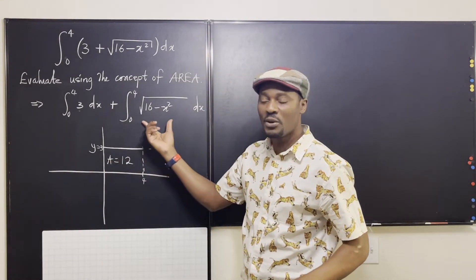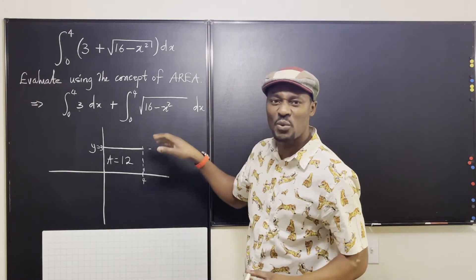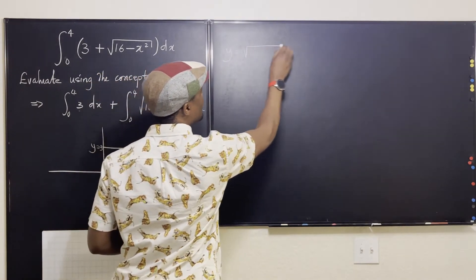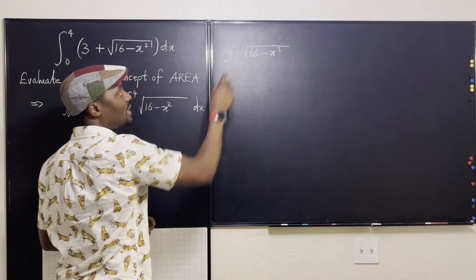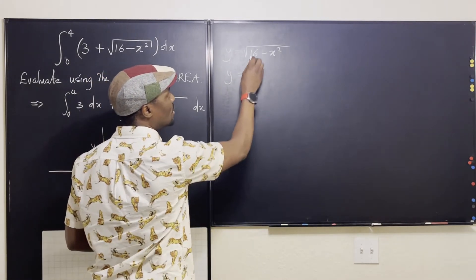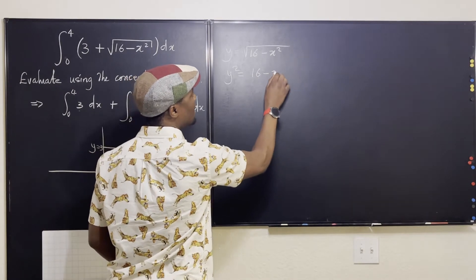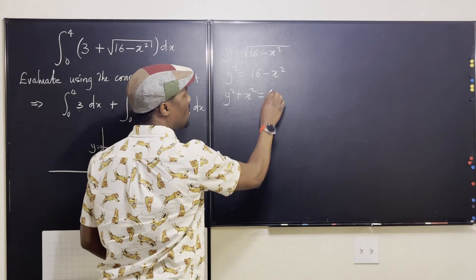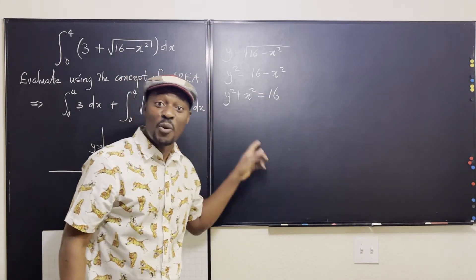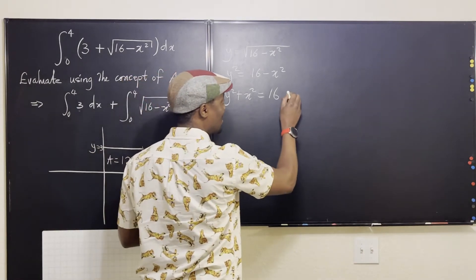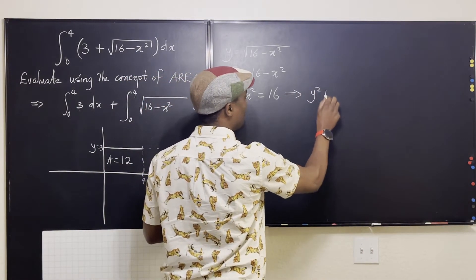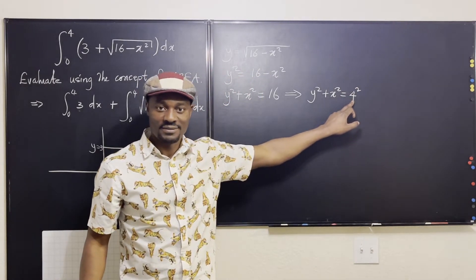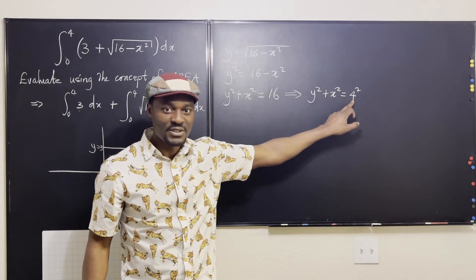Now we're going to add it to another integral given by y equals the square root of 16 minus x squared. Using the concept of area, if y equals the square root of 16 minus x squared, let's square both sides. You end up with y squared equals 16 minus x squared. If you move terms around, you get x squared plus y squared equals 16. This is the equation of a circle — specifically, x squared plus y squared equals 4 squared, so the radius of the circle is 4.